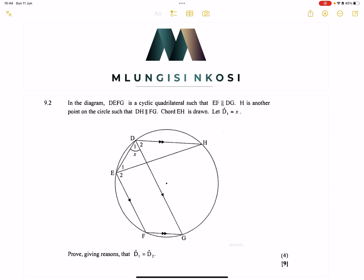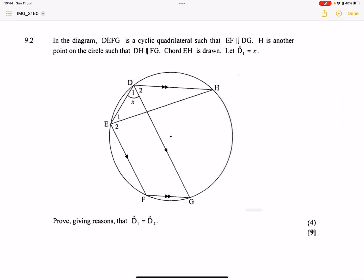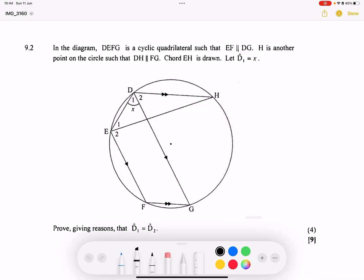They say in the diagram, we've got DEFG, which is a cyclic quad. So in my case, what I always like doing is just to try and highlight once they tell me that we've got a cyclic quad, it's always important for us to just indicate that cyclic quad. Let's just highlight it in a not so intimidating way. So there's our cyclic quad there. So as a result, I know that the opposite angles are supplementary. So we can use that principle.